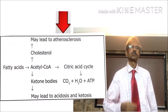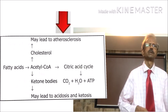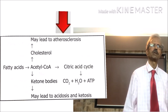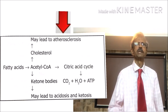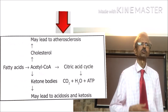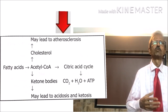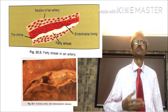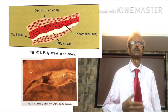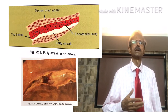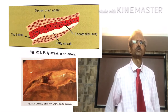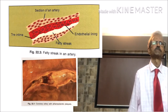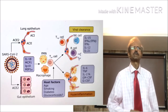In diabetes, cholesterol also rises in blood circulation. As shown in the figure on the left, increased blood cholesterol leads to atherosclerosis, which prevents free circulation of immune cells and antibodies in the body, and that helps the virus to spread faster in the body of a diabetic person.